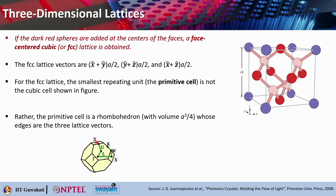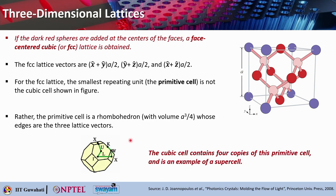The irreducible Brillouin zone for the FCC lattice is shown with important symmetry points: X, U, L, Γ, W, K. The cubic cell contains 4 primitive cells and can serve as a supercell. For computation, all information lives inside the Brillouin zone, with independent information found only inside the irreducible Brillouin zone. If you have sufficient computational resources, you can use the full Brillouin zone or even the cubic cell, but the irreducible Brillouin zone is most efficient.